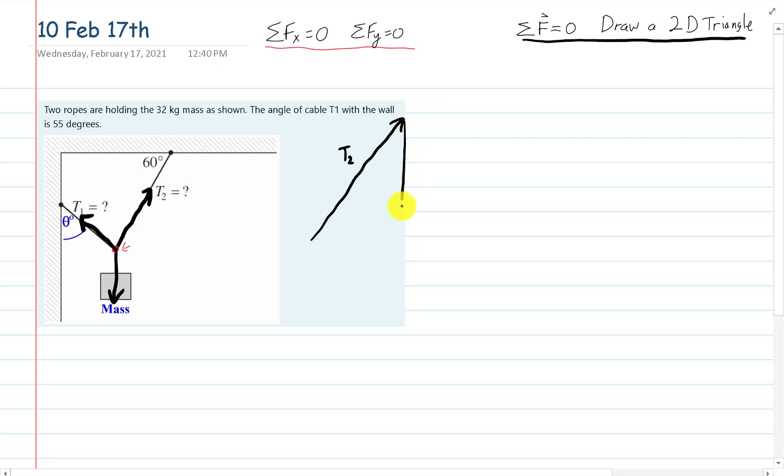I'm going to show you that T2 can go up, and then the force of gravity down, and then T1 up. You don't have to draw it that way.